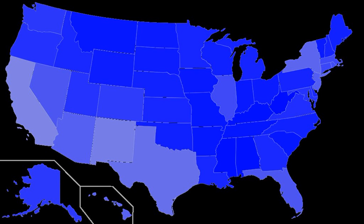American English varieties form a linguistic continuum of dialects more similar to each other than to English dialects of other countries, including some common pronunciations and other features found nationwide. Any North American English accent perceived as free of noticeably local, ethnic, or cultural markers is popularly called 'general' or 'standard' American, a fairly uniform standard of broadcast mass media and the highly educated.